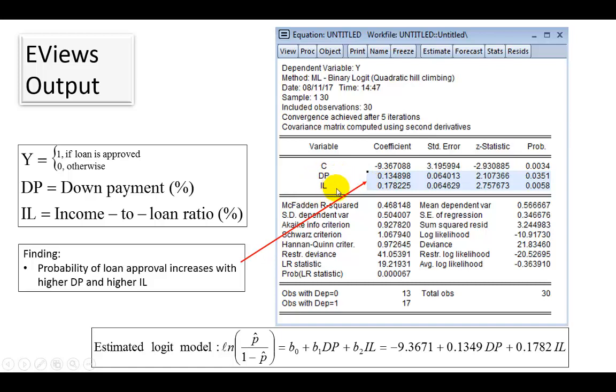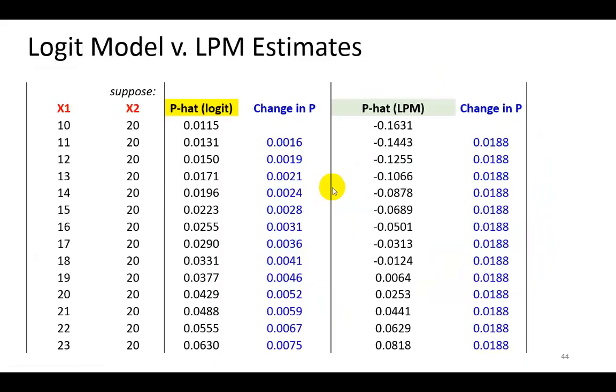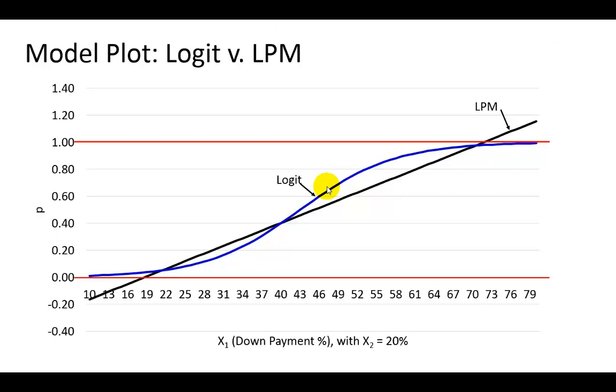While that might be intuitive, it will be interesting to examine how estimated probabilities change for different levels of either down payment or income-to-loan ratio. Now, as a side note, in an earlier presentation, I explained how estimated probabilities from the logistic model are bounded between 0 and 1, unlike the linear probability model, which sometimes can take on probability values exceeding 1 or below 0.